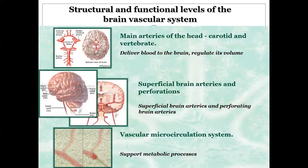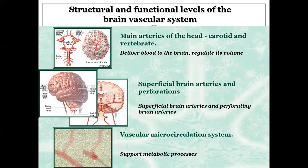It's important to refresh your knowledge about the structure and functional levels of the brain's vascular system. The most important main arteries of the head are the carotids and vertebral arteries — they deliver all blood to the brain and regulate its volume. The next level includes superficial brain arteries and perforating arteries. The final stage is the vascular microcirculatory system that supports all metabolic processing in brain tissue.